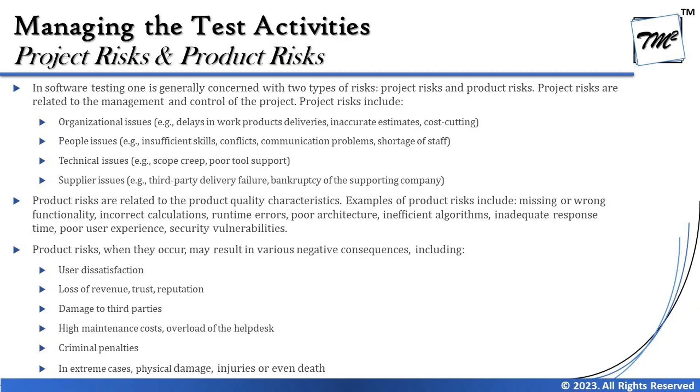Product risks are related to product quality characteristics. Examples of product risk include missing or wrong functionality, incorrect calculations, runtime errors, poor architecture, inefficient algorithms, inadequate response time, poor user experience, and security vulnerabilities. There could be any number of possibilities when thinking about product risk, but ultimately we are talking about functional and non-functional attributes. Not meeting a requirement or a particular feature not working is also considered a product risk.